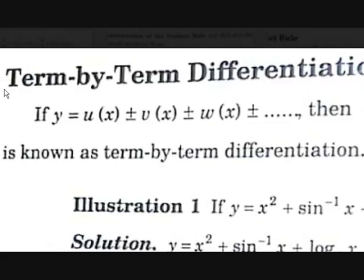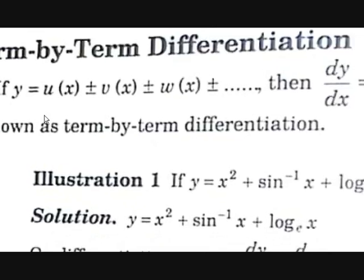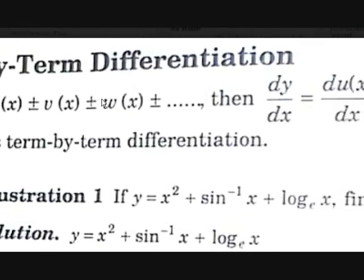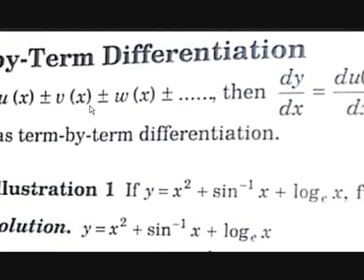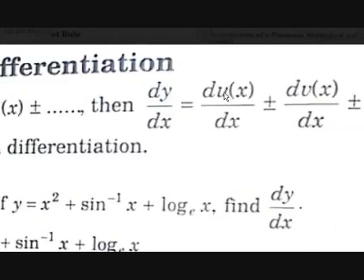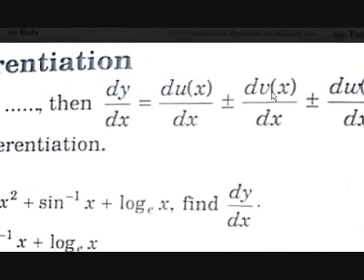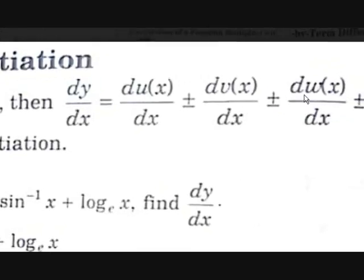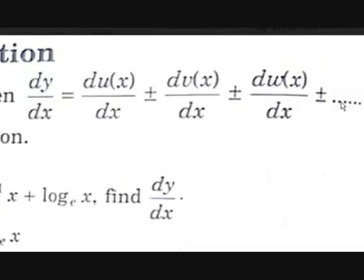Term by term differentiation means we can differentiate functions term by term. Terms are separated by plus or minus. In differentiation, there is a rule: if y equals u(x) plus or minus v(x) plus or minus w(x) and so on, then dy/dx equals du(x)/dx plus or minus dv(x)/dx plus or minus dw(x)/dx and so on.